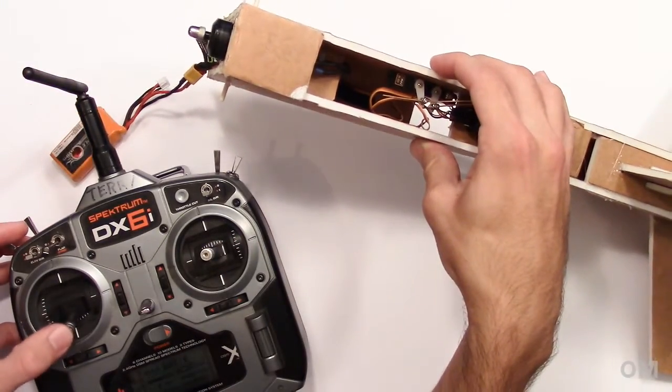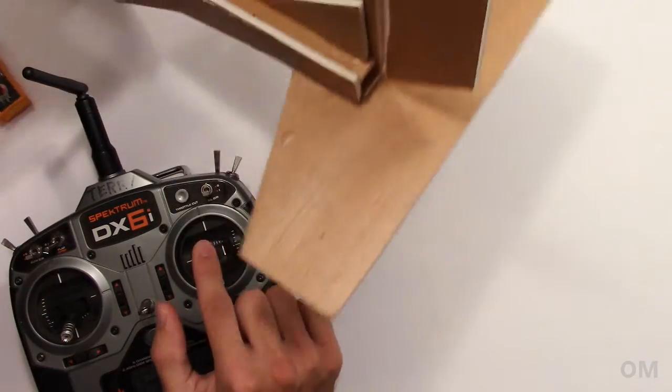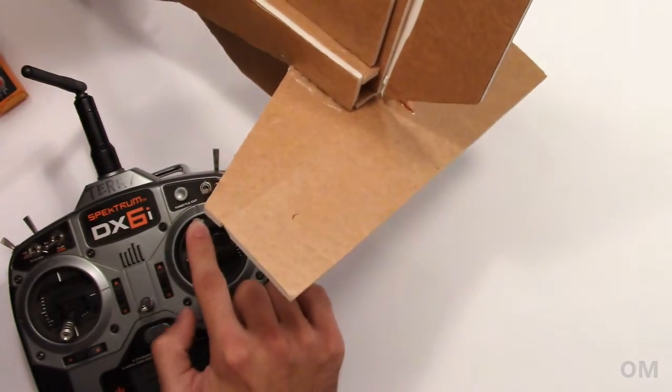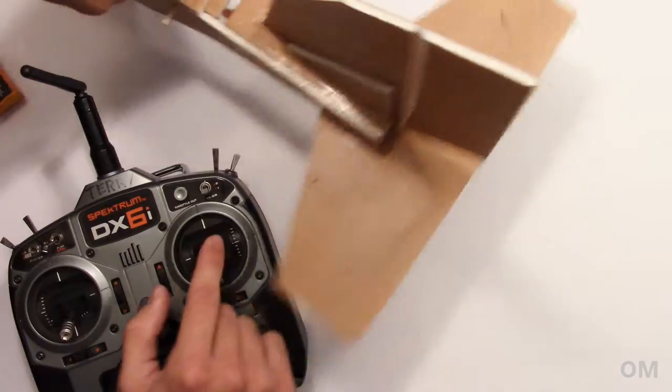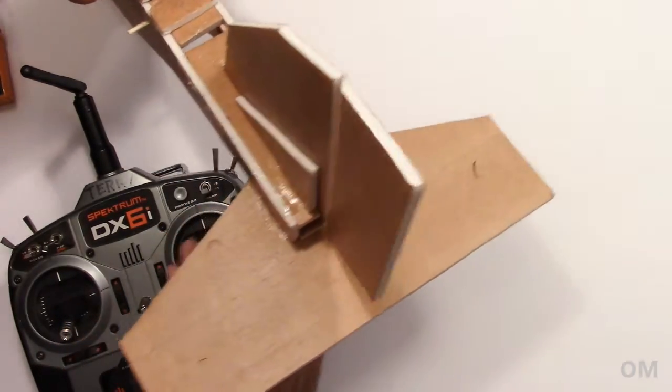So here we have the motor. Notice I took the prop off for safety. Here we have the elevator. When I pull back, it goes up. When I push forward, it goes down like so. And the rudder. Left is left, right is right, just like that.